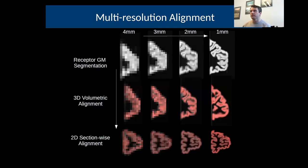You can see what that gives here. If we start off with four millimeters, we segment the receptor volume and align it to the MRI at this stage. We do the 2D section-wise alignment, so here we're really just warping the large anatomical features of the brain so it has the right shape. Then we begin the whole process again at three millimeters, go down to two millimeters.